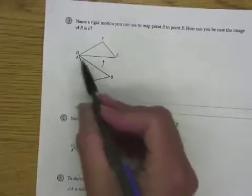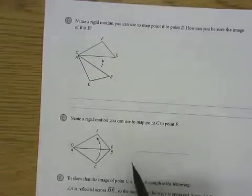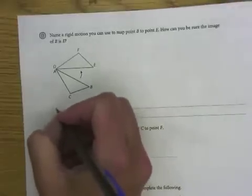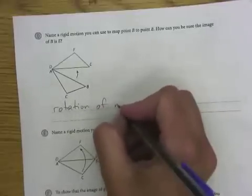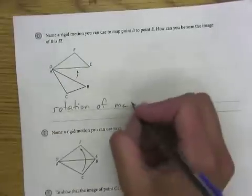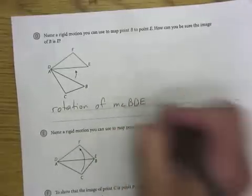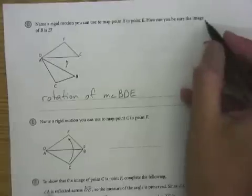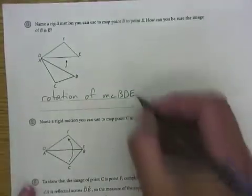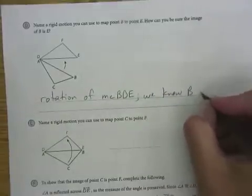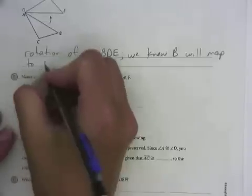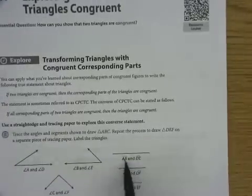Name a rigid motion that we could use to map point B to point E. That would be a rotation of the measure of angle BDE, whatever that measure may be. It says: how can we be sure that the image of B will be E? We know this because AB is equal to DE.